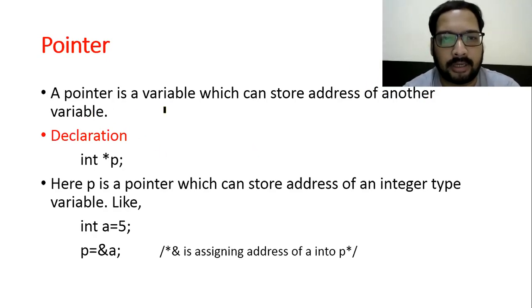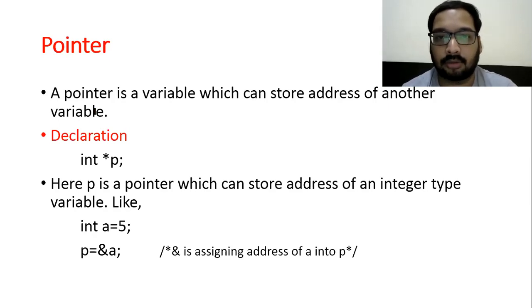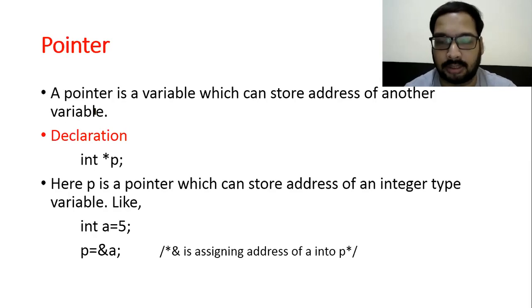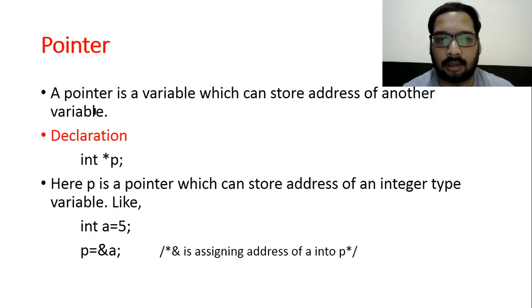Pointer is a variable which can store the address of another variable. So Pointer is also one variable, but Pointer stores the address of another variable's value. Every variable has been allocated memory, and whenever there is a variable in a computer, there is also some address associated with it.